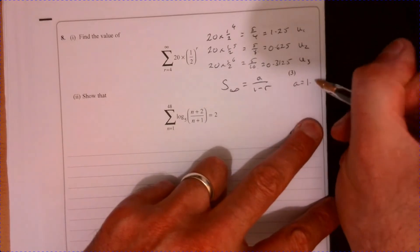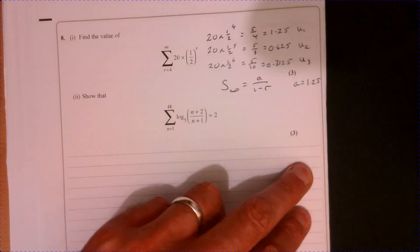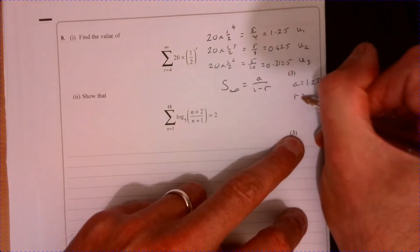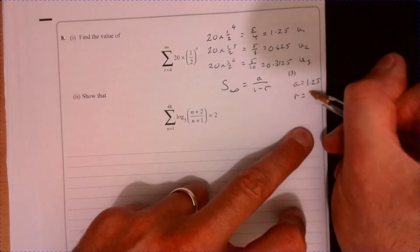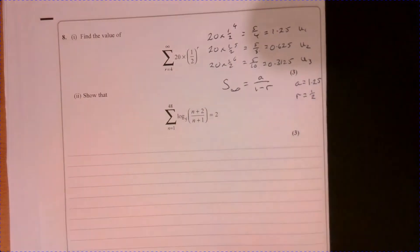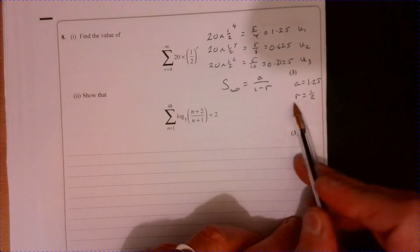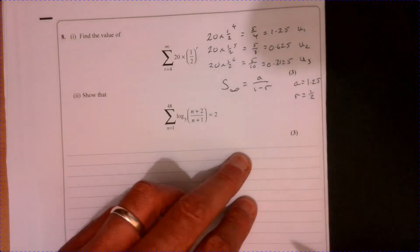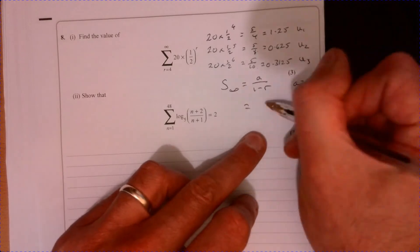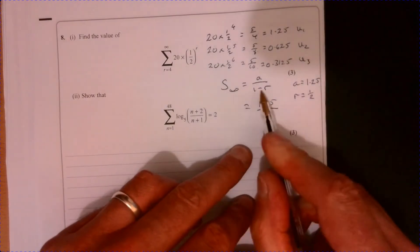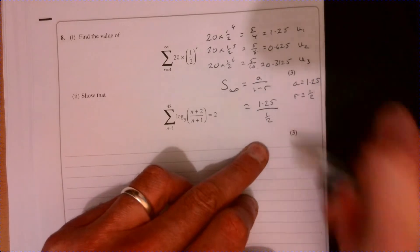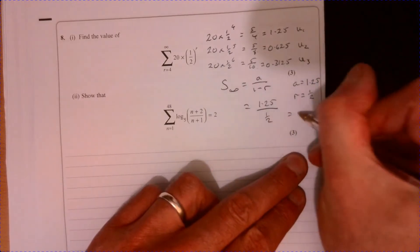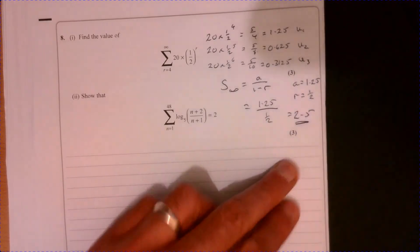So that's 1.25, and r is the amount that's being reduced by, the geometric series link between each term. It's being multiplied by half each time. So if you plug those in you simply get 1.25/(1 - 1/2), so divide by half, that's 2.5.